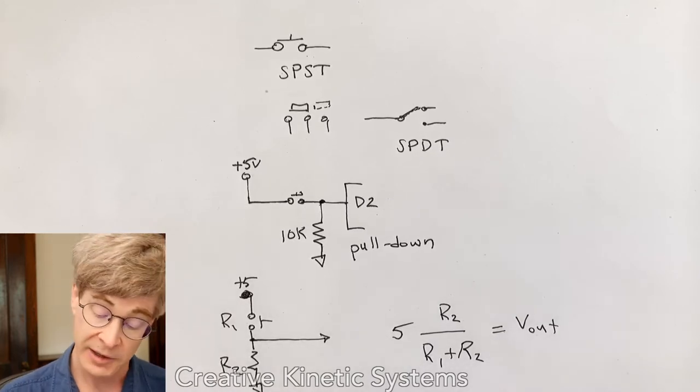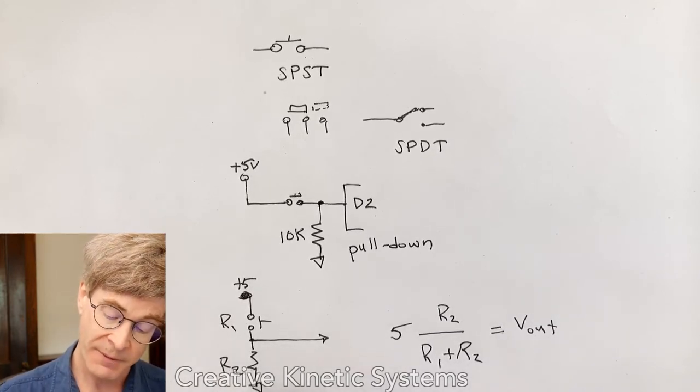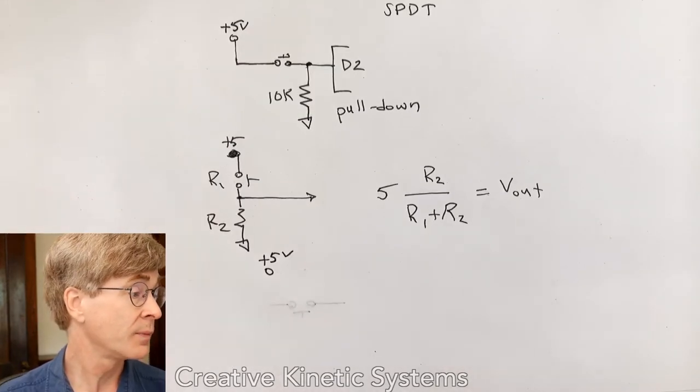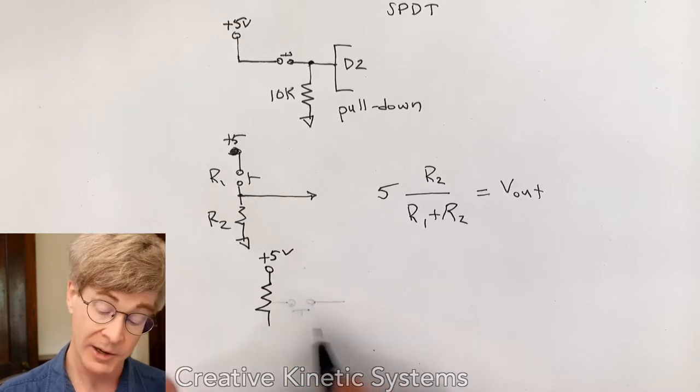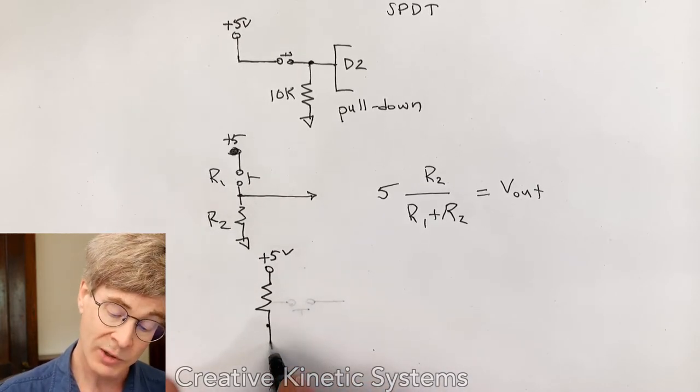we get an inverse logic. So just to draw that, if I take my five volt supply, plus five volts, and I wire a resistor on the upper leg of the divider, and I put my switch on the lower leg of the divider to ground,